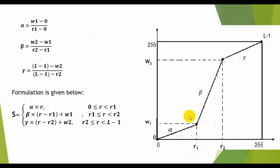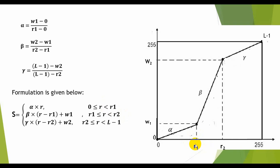We are going to examine this graph and then apply this formula to our code. Here you can see that alpha, beta, and gamma are the slopes of these portions. After finding these slopes we are going to multiply them with these values. Here r is our pixel value, so if it is from 0 to less than r1, then we need to multiply the value with alpha — that is this slope — calculated by dividing w1 by r1.